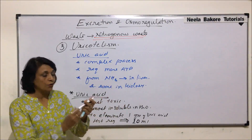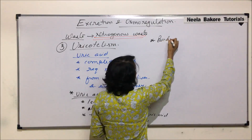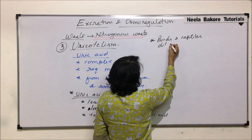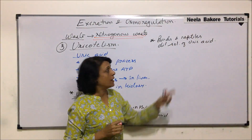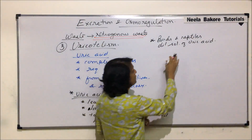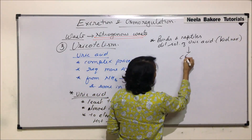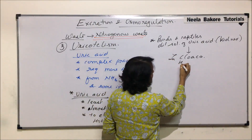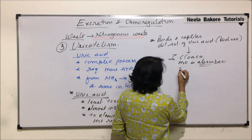Since the kidney handles only solutions, how does this solution get converted into solid material? Especially in birds and reptiles, a dilute solution of uric acid is sent from the kidney to the cloaca. In the kidney, the uric acid eliminated must be in solution form, so a dilute solution is sent to the cloaca where all the water gets absorbed, and what remains is only solid uric acid crystals.